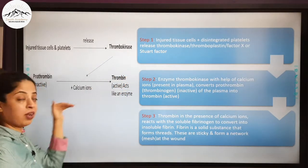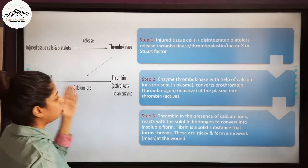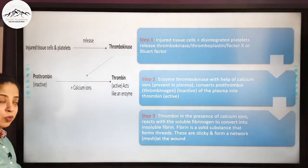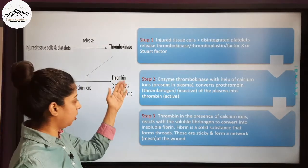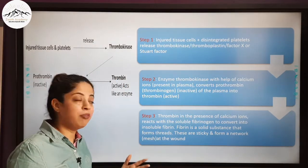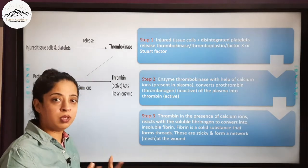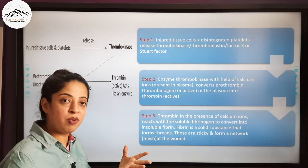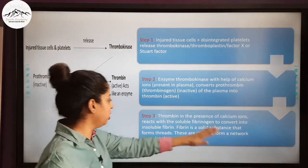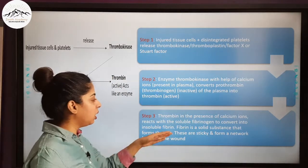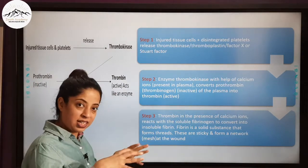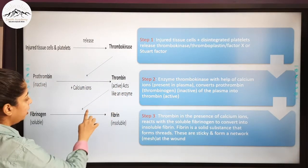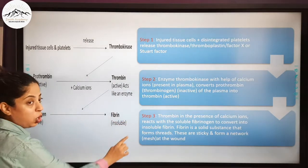This thrombin acts as an enzyme for the next reaction, Step 3. Thrombin, again in the presence of calcium ions, reacts with soluble fibrinogen present in the plasma and converts it into insoluble fibrin. This fibrin is a solid substance that forms sticky threads, creating a mesh-like network at the wound.